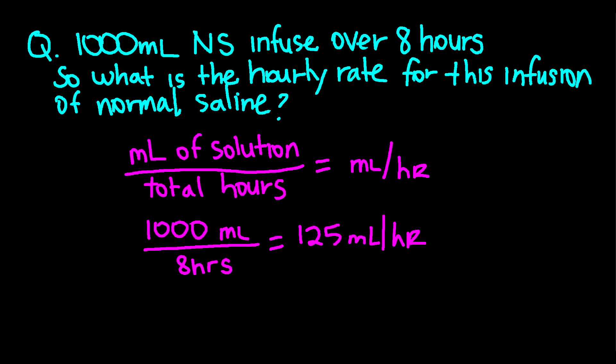A patient is prescribed 1,000 mLs of normal saline to infuse over 8 hours. What is the hourly rate? The formula is: mLs of solution divided by total hours equals mLs per hour. Divide 1,000 mLs by 8 hours, which equals a rate of 125 mLs per hour.